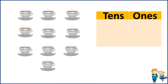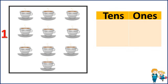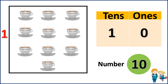Now let's take another set of examples. Here we have some teacups. Let's group them as 10 and start counting: 1, 2, 3, 4, 5, 6, 7, 8, 9, 10. So we have 1 ten. In the 10s place we have 1 ten, and in the 1s place we have 0. So the number here is 10.